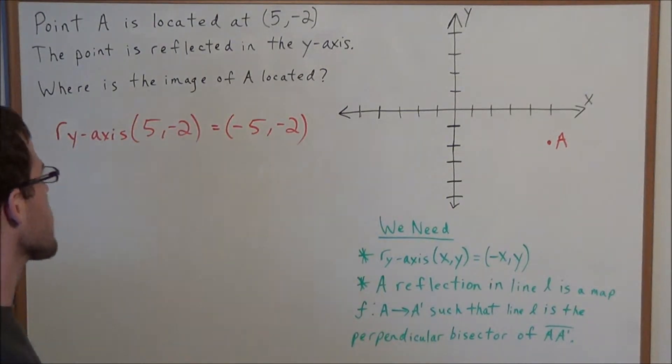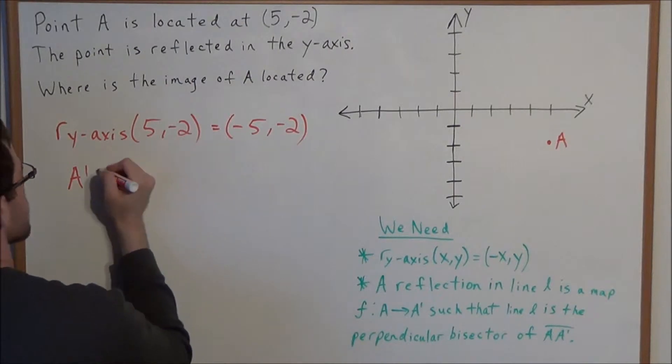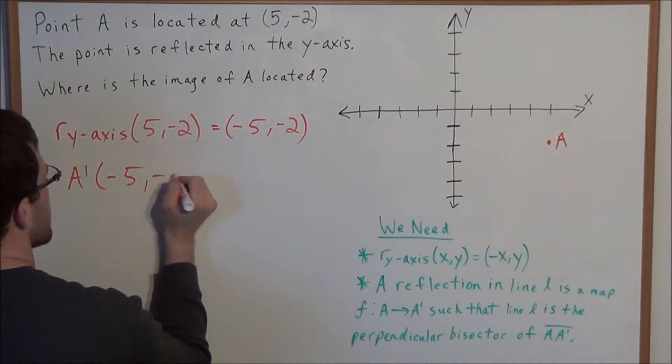So where is the image of A located? Well we can call the image of A, A prime, and A prime is located at negative 5, negative 2.